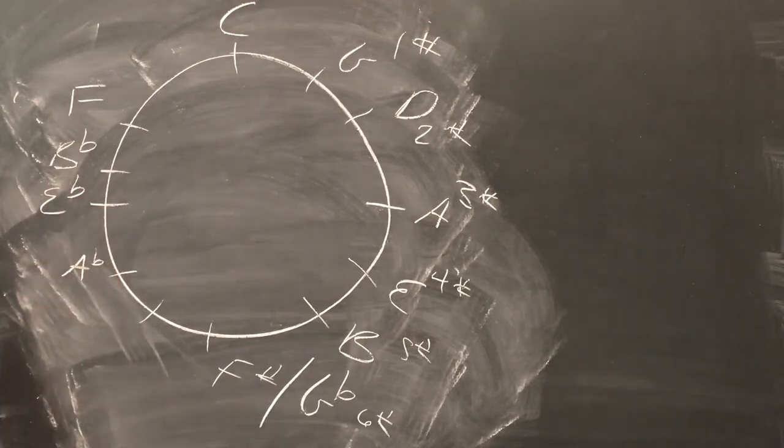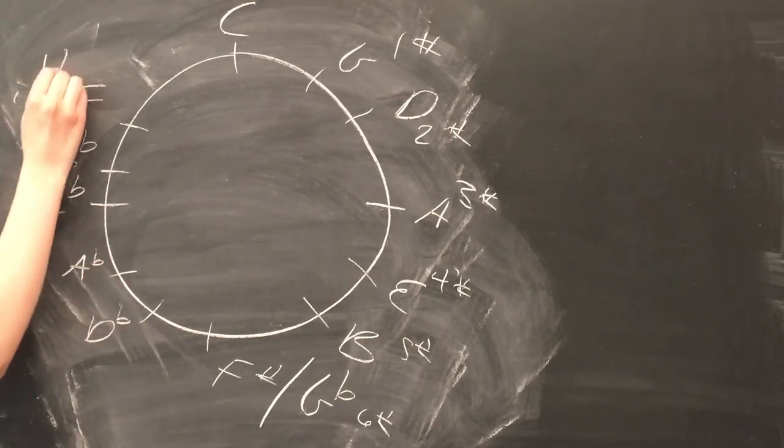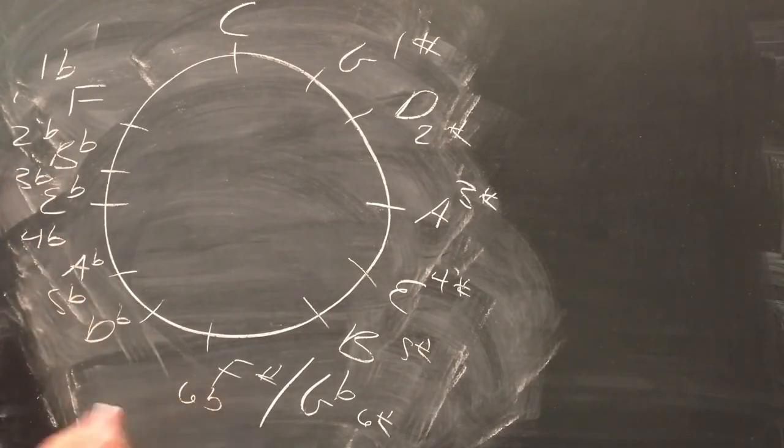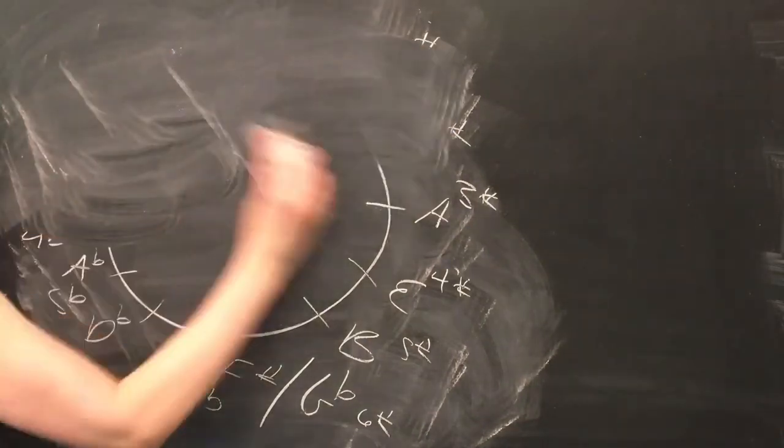We can start back at C and start adding flats just as we added the sharps. F has one flat, B flat has two flats, and so on. And as you'll notice, as we're going down the left side of the circle, we're going down a fifth instead of up a fifth.